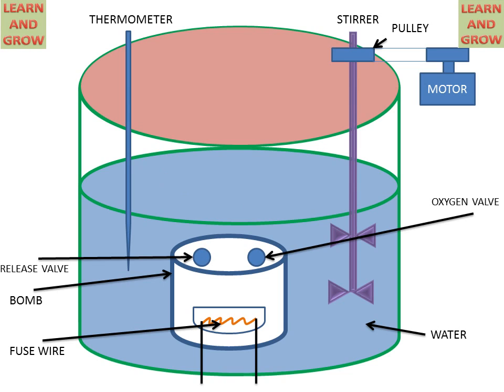Now, we see the working of the bomb calorimeter. The stirrer will help in maintaining the temperature of water. Then, a sample is placed in the silica crucible.